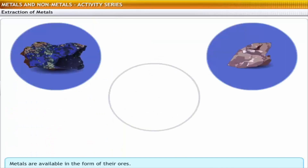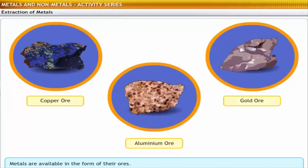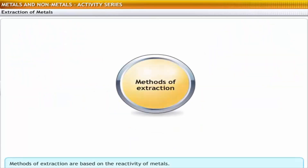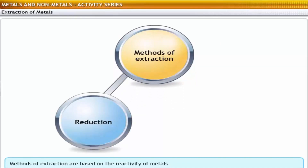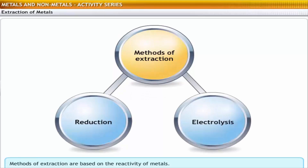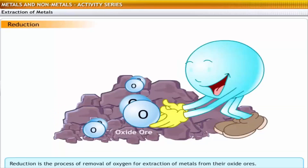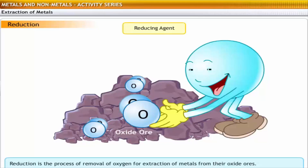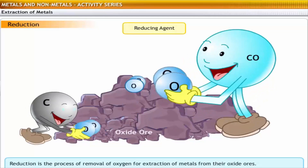Moving further down, metals placed below copper do not rust easily because of their low reactivity. A number of metals are available only in combined forms as ores. To obtain the pure forms of these metals, we need to extract them from their respective ores. Based on the reactivity displayed by metals, they can be extracted through the following methods: reduction and electrolysis.